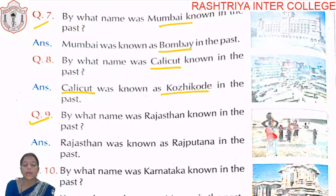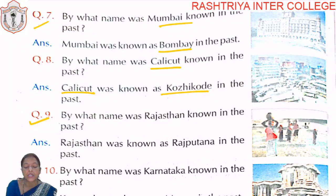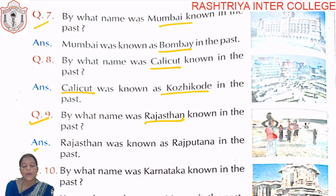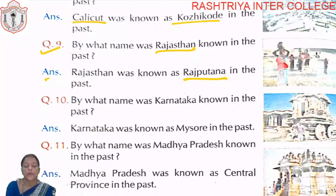Question number nine: By what name was Rajasthan known in the past? Rajasthan ko puraane time mein kis naam se jaana jaata hai? Rajasthan was known as Rajputana in the past. Rajasthan ko Rajputana ki naam se jaana jaata hai.